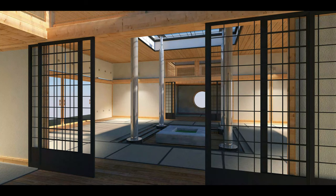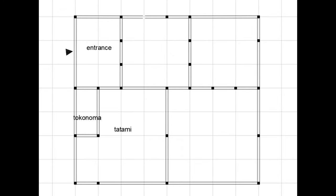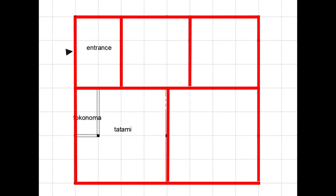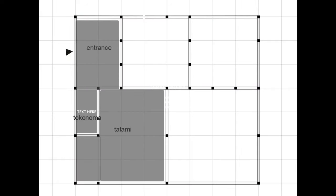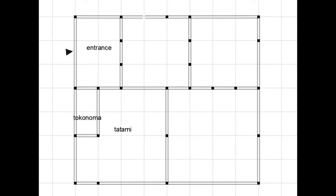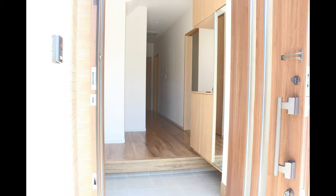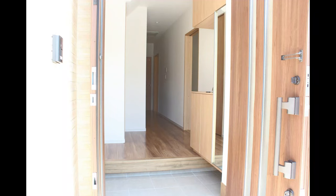We've covered some elements that define a volume of space, such as walls, doors, and materials. Now we'll see how these interior spaces are used. When you enter a Japanese house there's an entrance hall — this space is at the same level as the exterior ground, and this is where shouji are placed before entering. This space is called Genkan, and it is defined on one side by the entrance and on the other side by a step, because the rest of the house has a higher floor level.